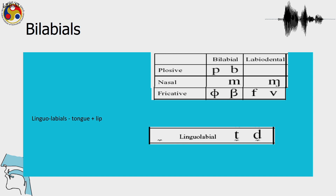Let us now review the places of articulation that we have looked at till now, and look at the corresponding symbols again.